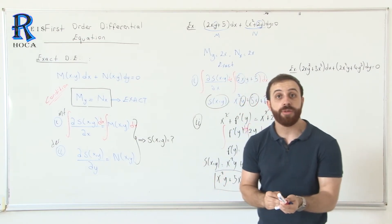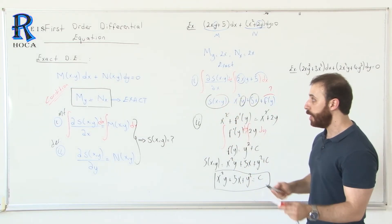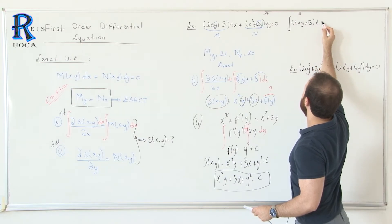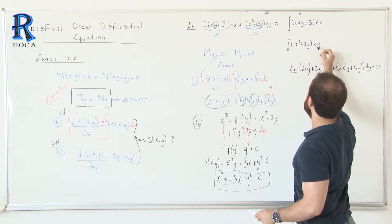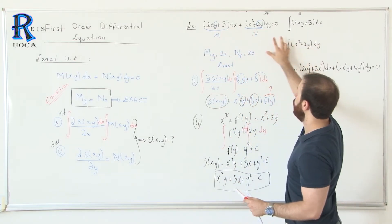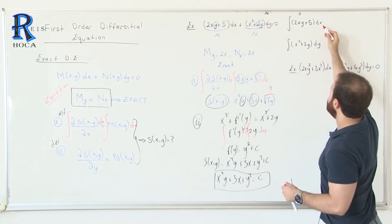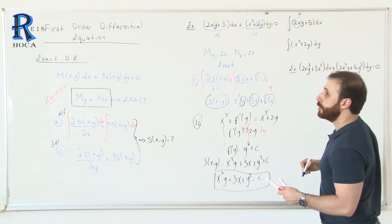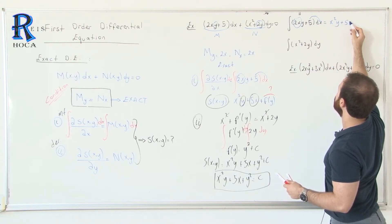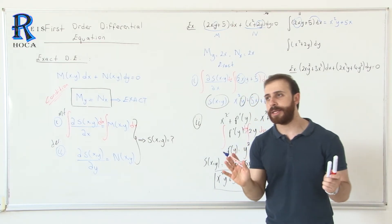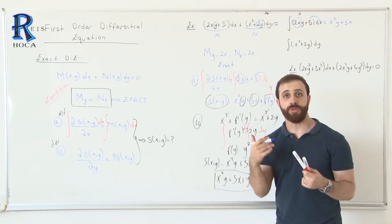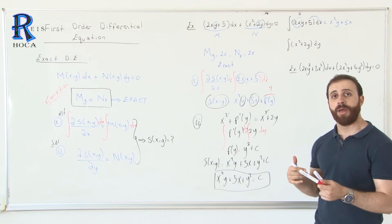There is an alternative, easier technique for solving exact differential equations. Directly take the integral of both parts: integrate (2xy + 5) dx and integrate (x² + 2y) dy. Take the first integral with respect to x and the second with respect to y. For the first: the integral of 2xy with respect to x gives x²y, and the integral of 5 gives 5x. For the second: the integral of x² with respect to y gives x²y, and the integral of 2y gives y². Using this technique, it is not necessary to add f(y) or f(x).